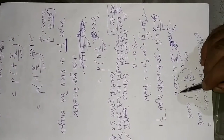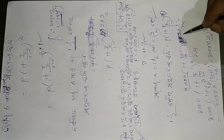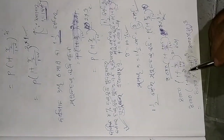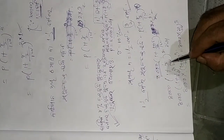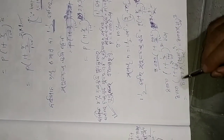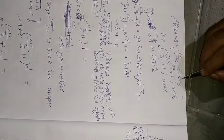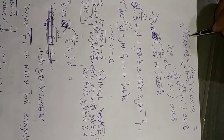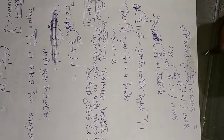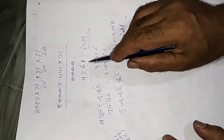So P equals 1 plus 10 by 2 by 100 raised to 2 by 2. Then, 8000 multiplied by 1 plus 1 by 4, and again 8000 x 1 by 4. This will simplify to 852.